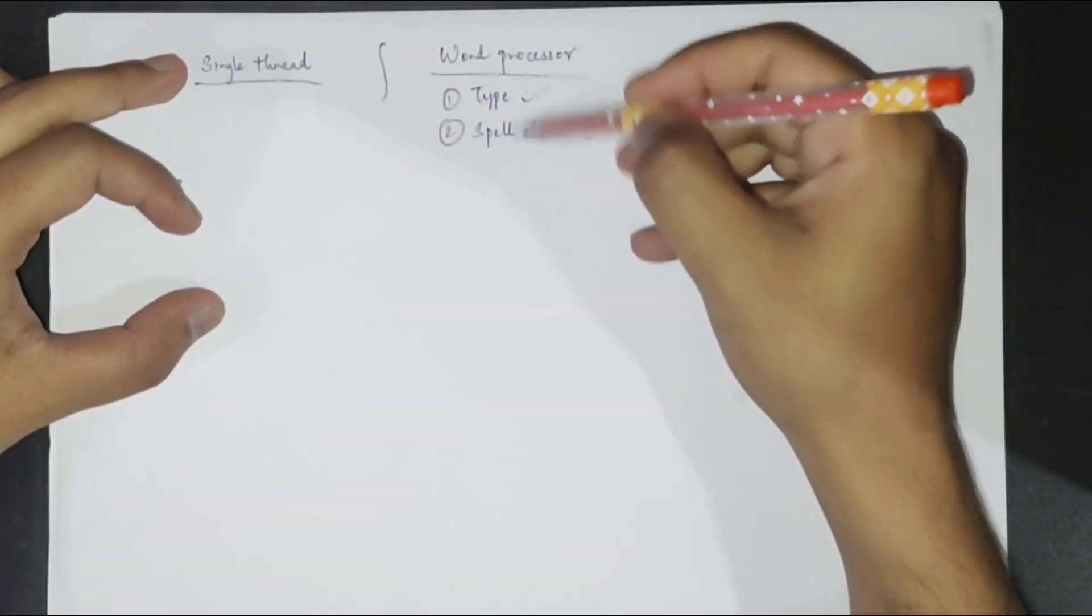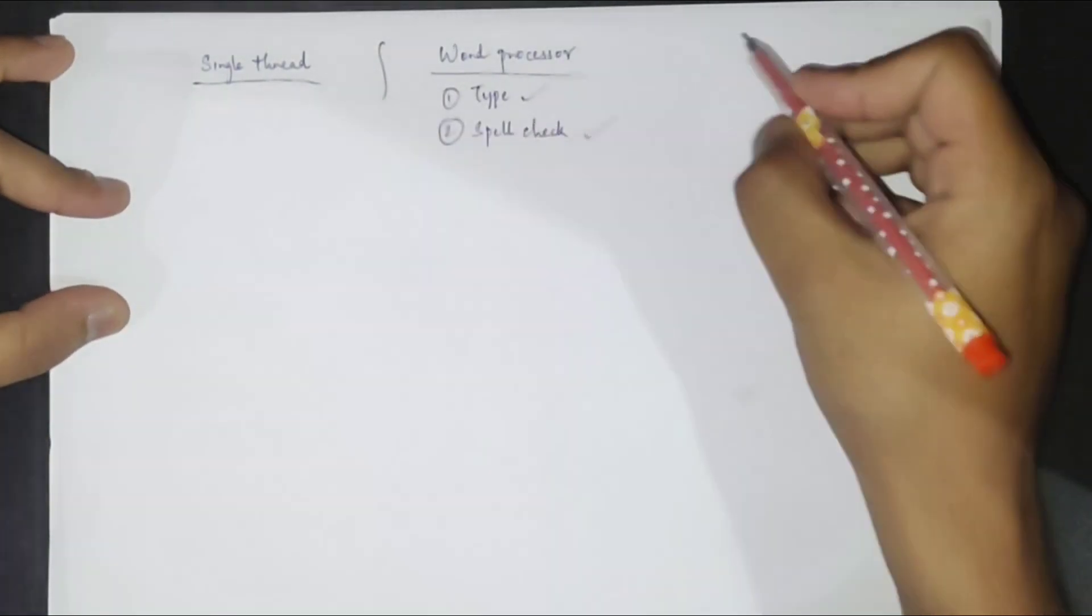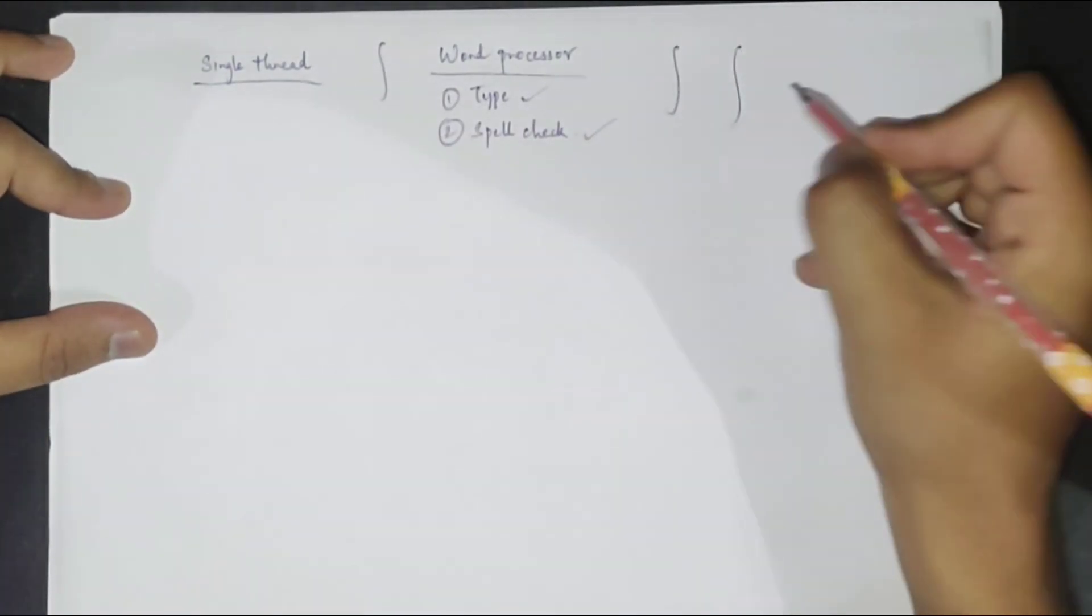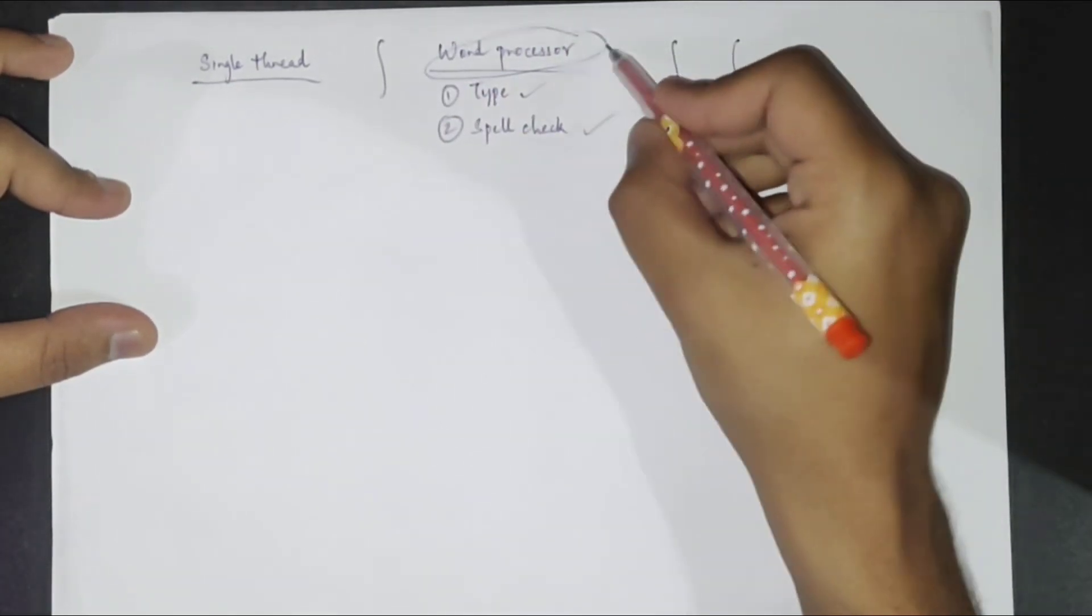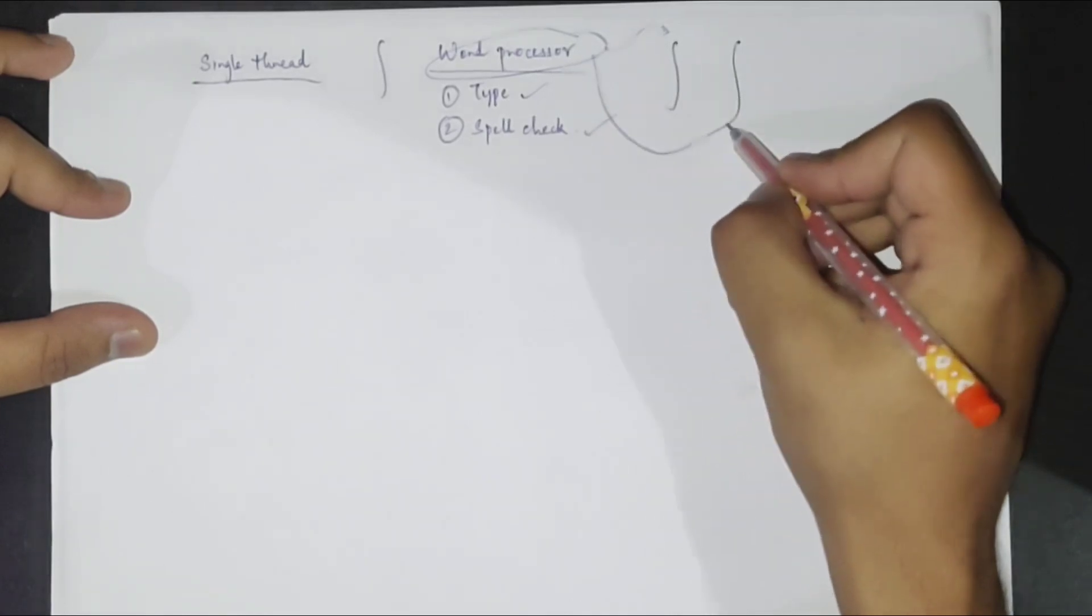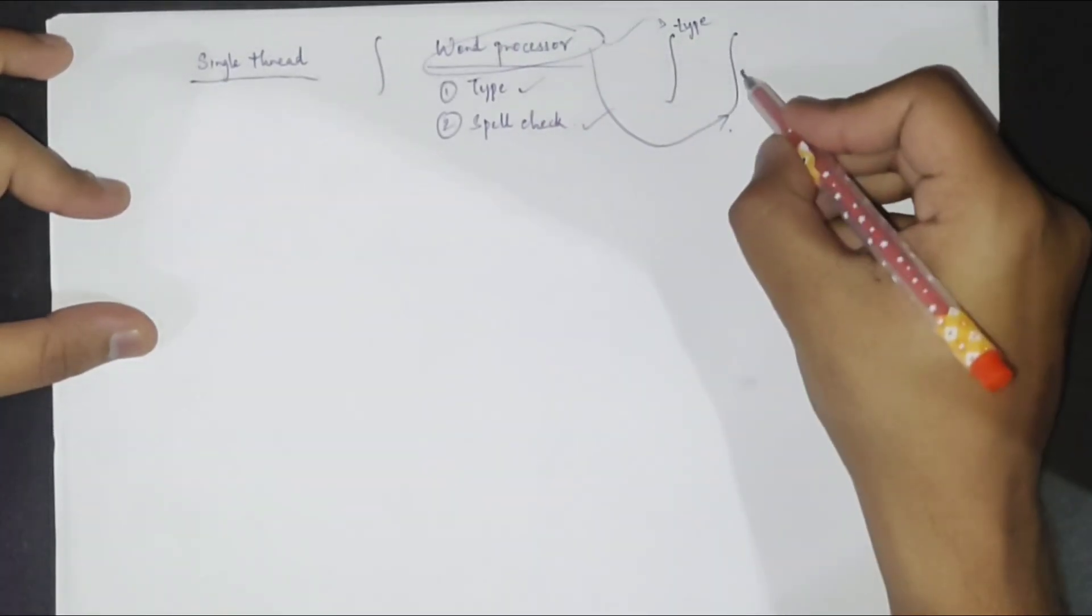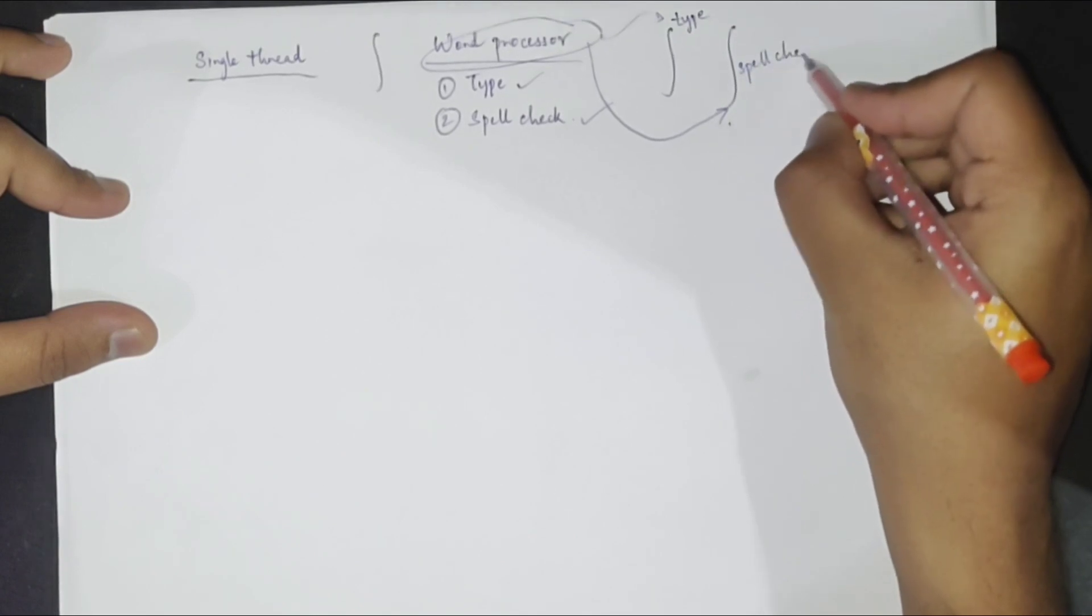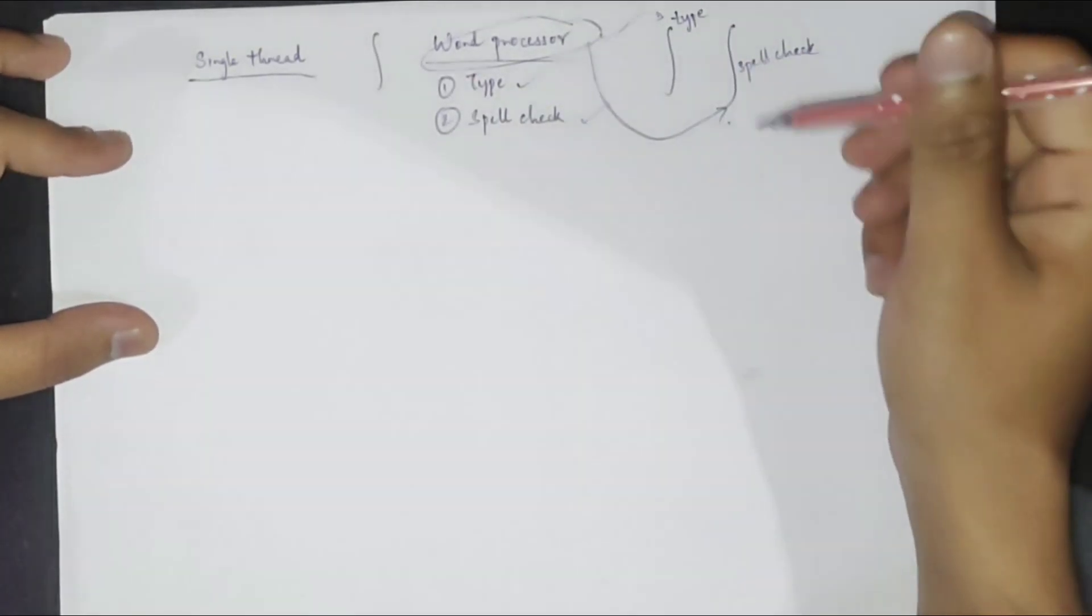Now if you want both of these tasks to be done at the same time, then we would basically have to do threading. So whatever program we were running, this program should actually be running on two threads. One should handle the typing part and the other should be doing the spell check part. So this is where the threads come into play a vital role.